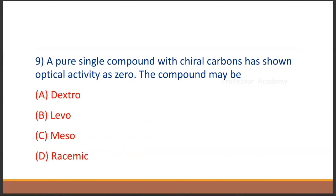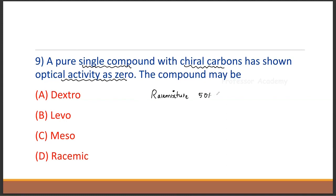A pure single compound with a chiral carbon shows optical activity of zero. What could this compound be? A chiral carbon normally gives optical activity. But if a pure single compound has chiral carbons and optical activity is zero, it could be a meso compound or a racemic mixture. A racemic mixture is 50% D and 50% L — plus and minus cancel out, giving optical activity zero.